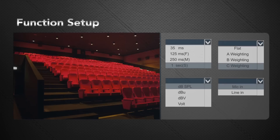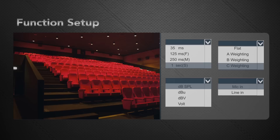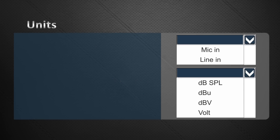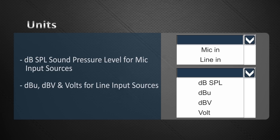So these are just a few of the special functions of the PAA6, all of which can be accessed by the touch screen or onboard controls. The PAA6 has different unit settings for various uses: SPL, or sound pressure level, is used for microphone input, while DBU, DBV and volts can all be selected when using the line inputs.